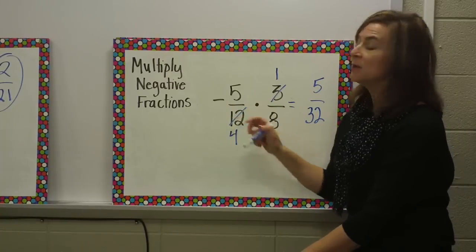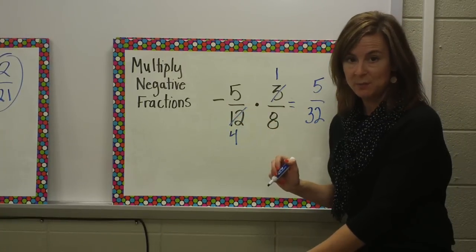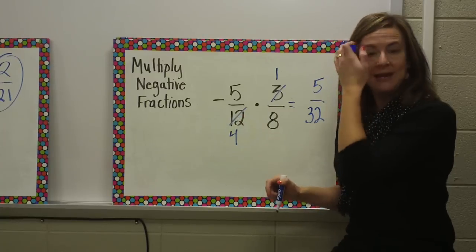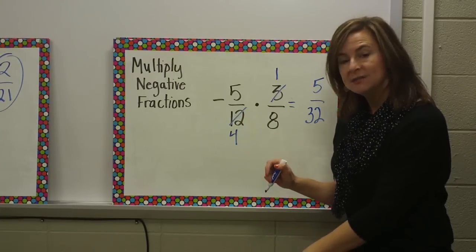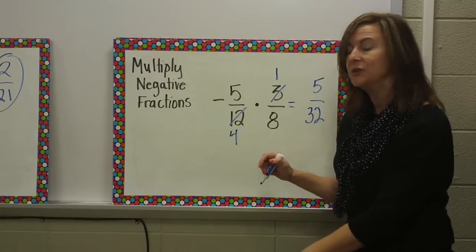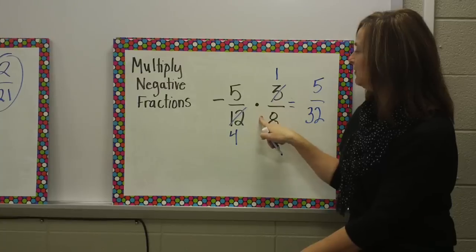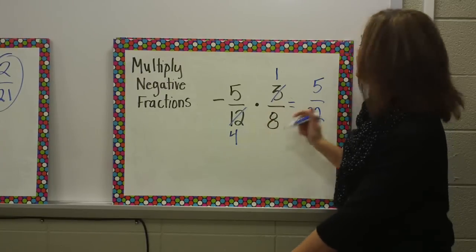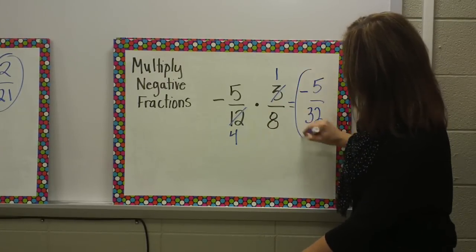I need to remember my rules with positive and negative numbers. When I multiply and divide, same signs are positive, different signs are negative. Here, I have a negative and a positive, so I have different signs, so my product is going to be negative.